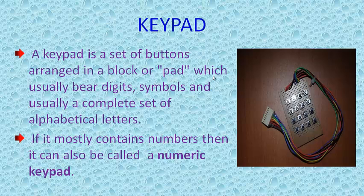The keypad is interfaced with the microcontroller. A keypad is a set of buttons arranged in a block, containing digits, symbols, and alphabetical letters — for example, a 4x4 matrix keypad. Examples include mobile keypads and laptop keyboards. Mostly for numbers we use a numeric keypad. For voting also, we need a keypad for casting votes.